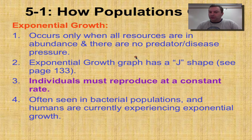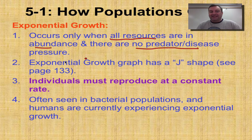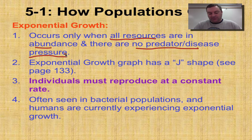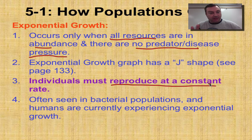Exponential growth occurs very rarely and it doesn't last a long time typically — we're going to show you one exception a little bit later. This occurs when all resources are in abundance and there's no predator or disease pressure. In other words, life is good. You can survive and reproduce as much as you would like — you're going to reproduce at a constant rate because nothing's halting you from having babies. There's plenty of food, no predators, no disease. Once again, life is great.